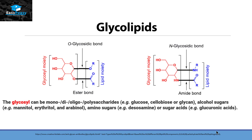The glycosyl moiety can be mono, di, oligo, or polysaccharide. They can be alcohol sugars, amino sugars, or sugar acids.